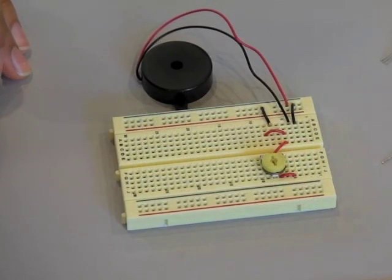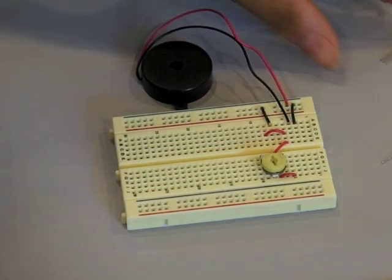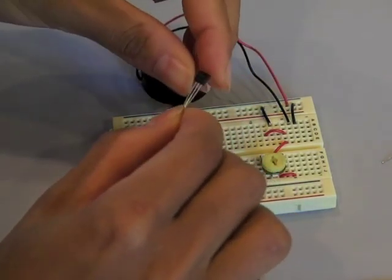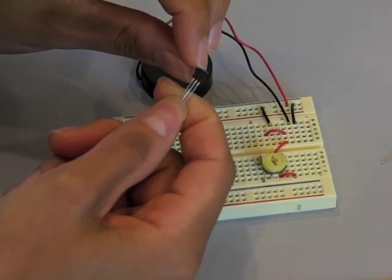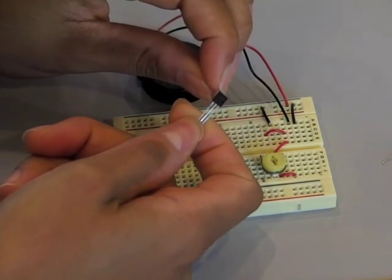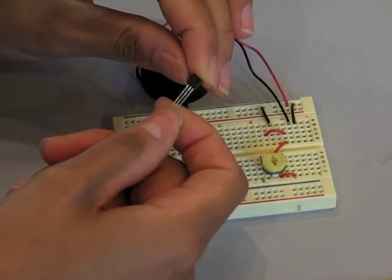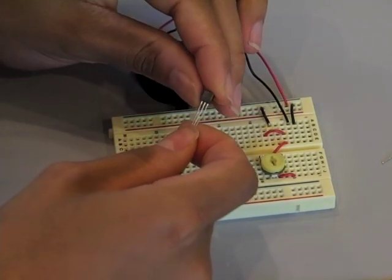The next step is to add our SCR and transistor. These are two components that look almost alike. You can differentiate them by looking at the case. One of them will say EC103D and that's the SCR. The other one will say 2N2222 and that's the transistor. We're going to work with the SCR first.